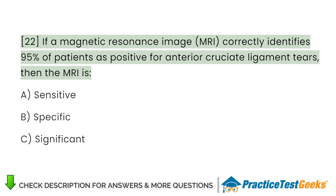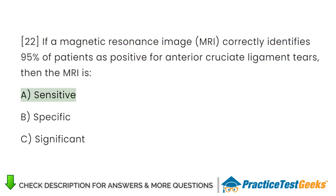If a magnetic resonance image (MRI) correctly identifies 95% of patients as positive for anterior cruciate ligament tears, then the MRI is: A. Sensitive. B. Specific. C. Significant.